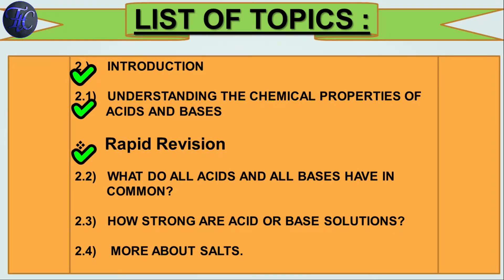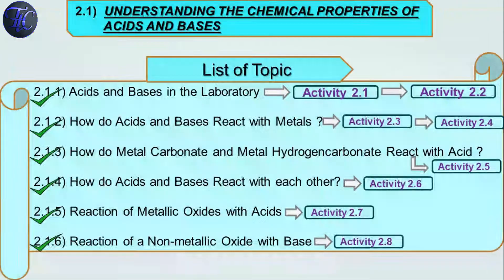Let's do a quick summary of what I had covered in my previous video lecture. I had completed the introduction, then understanding chemical properties of acids and bases, then I had made rapid revision videos on chemical properties of acids and bases. Today we are going to see topic 2.2. These are the list of topics which I had covered in 2.1 with the help of activities.